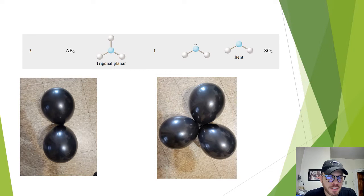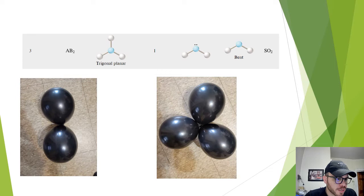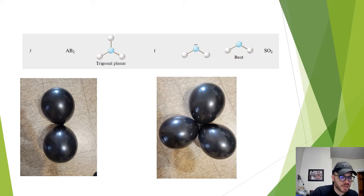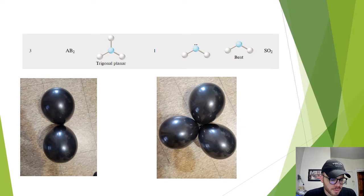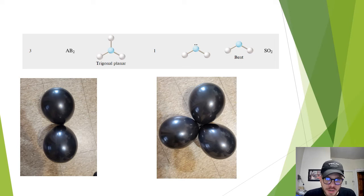In the next slides, we are going to visualize electron domain geometry and molecular geometry using balloons. When there are only two balloons, they orient themselves to point in opposite directions. With three balloons, the arrangement is trigonal planar. Like the B atoms in our ABX molecules, the balloons are all connected to a central fixed point representing the central atom A. With three electron domains, the molecule type is AB2, the electron domain geometry is trigonal planar with one lone pair, the molecular geometry is bent, and an example is sulfur dioxide.